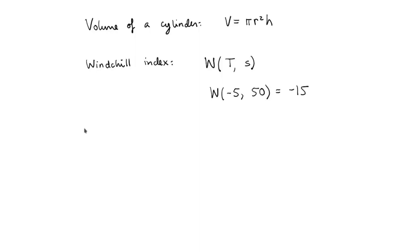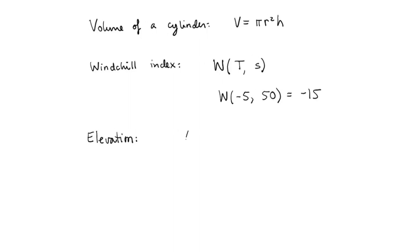Another example would be the elevation function. This is a function that assigns to every point a particular value, which is the altitude at that point. Suppose you're in the mountains at a certain position in x and y coordinates — the elevation function assigns the altitude at that point. Let's call it a, which takes as input the x and y coordinates and outputs the elevation at that point.